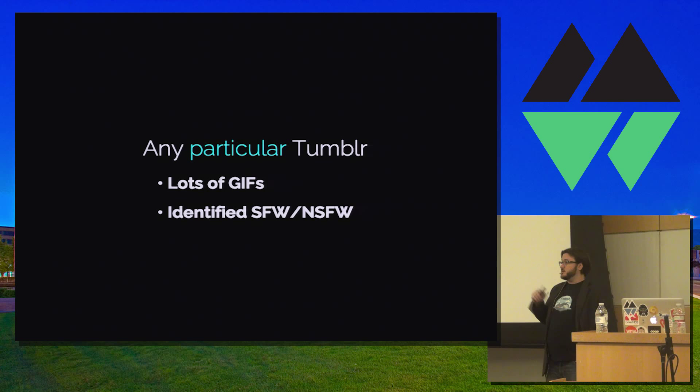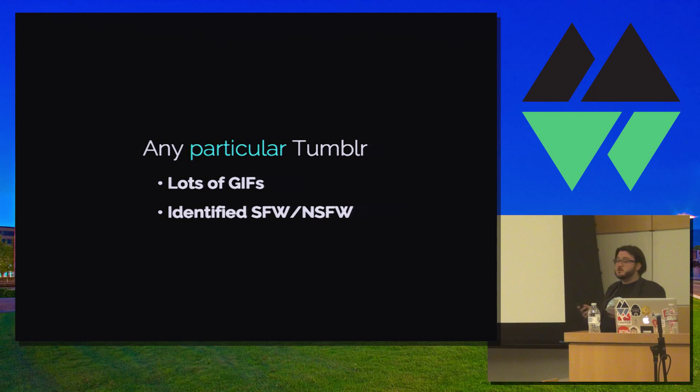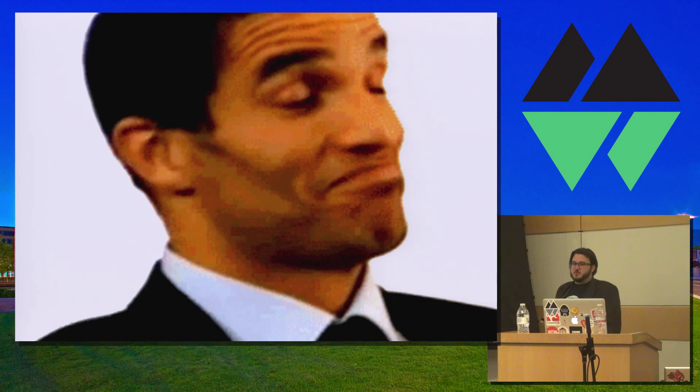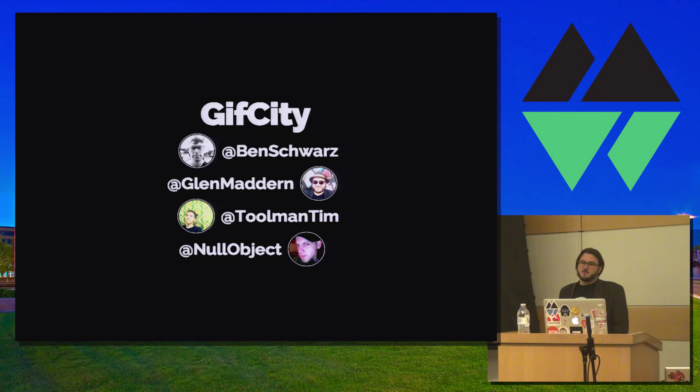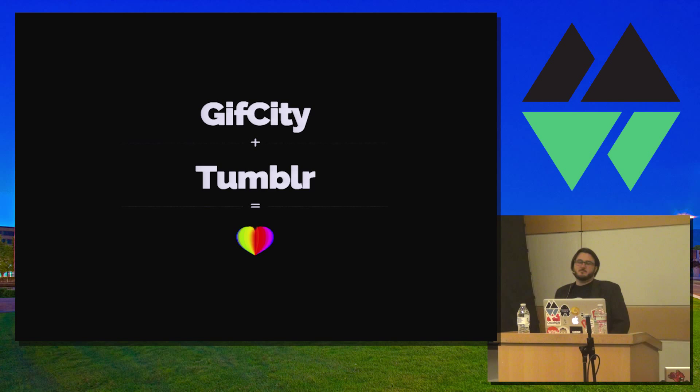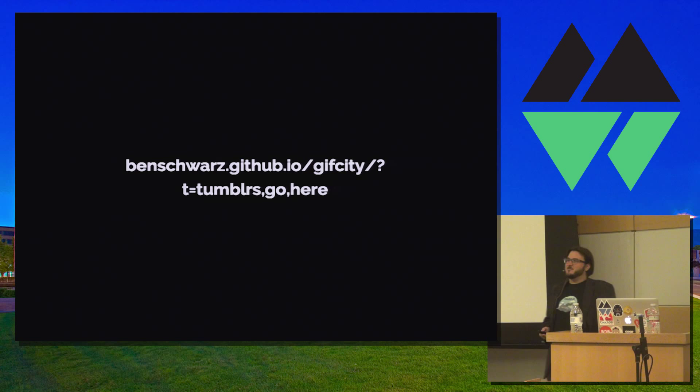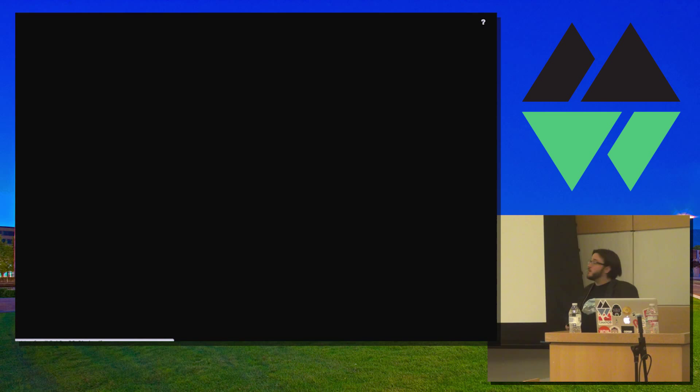We wanted random collections of GIFs that were curated to be totally safe for work, and somebody suggested using Tumblr. However, a particular Tumblr can be safe for work — the API defines it as such — and often a Tumblr can be full of GIFs. So we put our heads together and came up with a thing called GIF City. Basically it's GIF City and Tumblr together making wonderful GIF love. We never really launched it because we never considered it finished, but we've been using it for about 12 months.